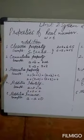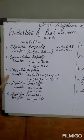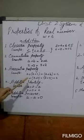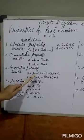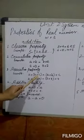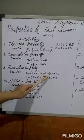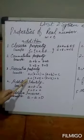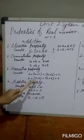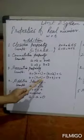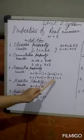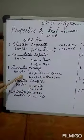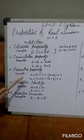The next property is the associative property. For real numbers A, B, C: A plus (B plus C) equals (A plus B) plus C. For example, 2 plus (3 plus 4) equals (2 plus 3) plus 4 — both sides are equal. This property is called the associative property.